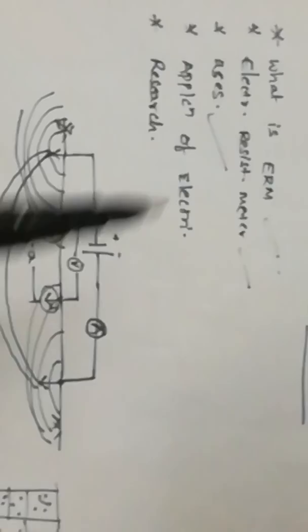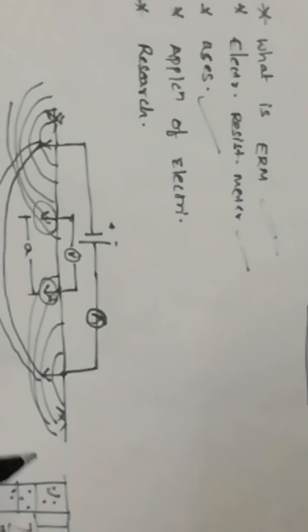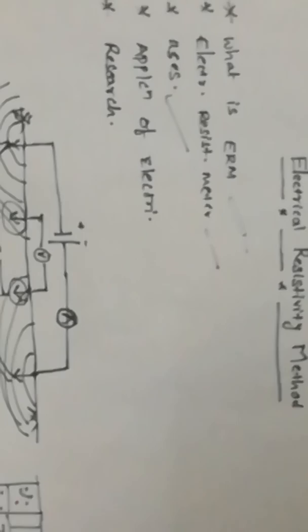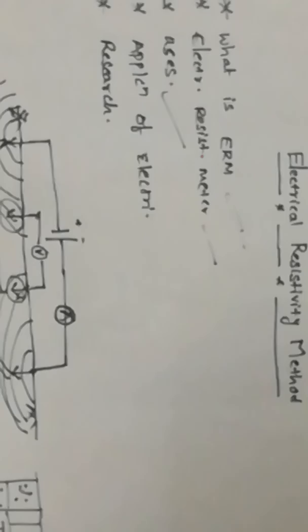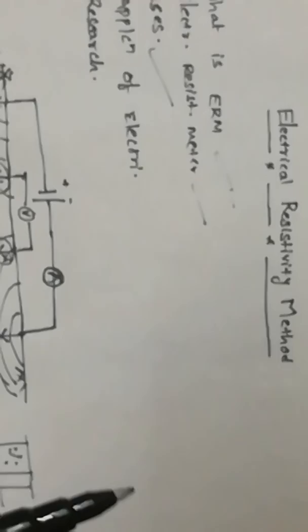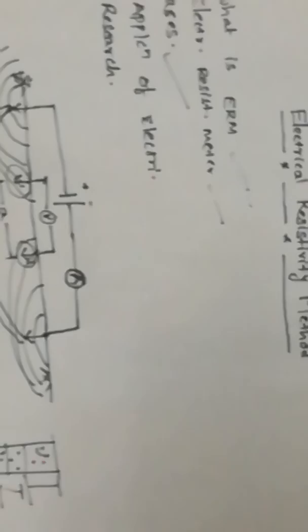The electrical resistivity method is used for finding groundwater depth — at what depth the water table is present. There are various uses: we get the profile of the soil present underneath. The applications of the electrical resistivity method include hydrological and hydrogeological purposes, which I will explain later. I will also be explaining the research I have done on the electrical resistivity method.